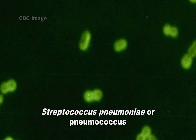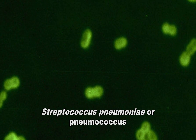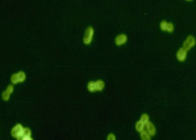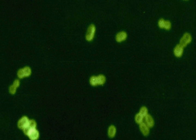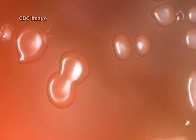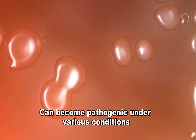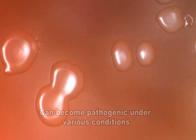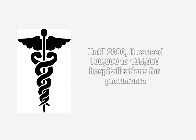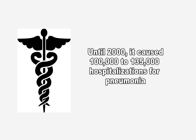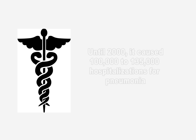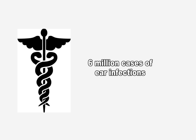Streptococcus pneumoniae, or pneumococcus, is a type of gram-positive bacteria. It can often be found in the upper respiratory tract of humans, but as with many natural flora, it can become pathogenic under the right conditions and cause pneumonia, paranasal sinusitis, and meningitis.